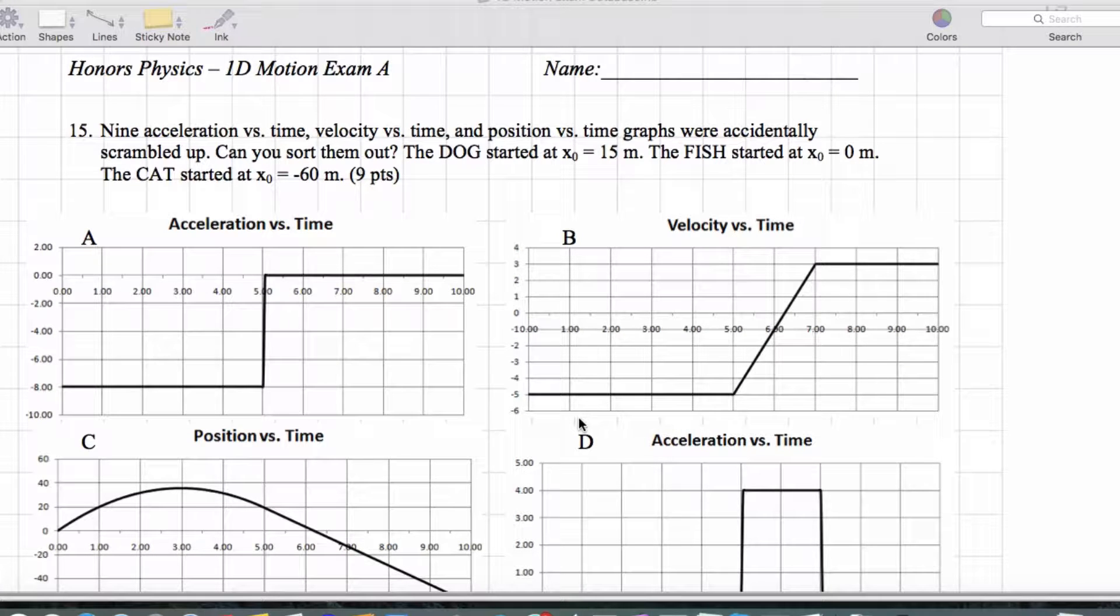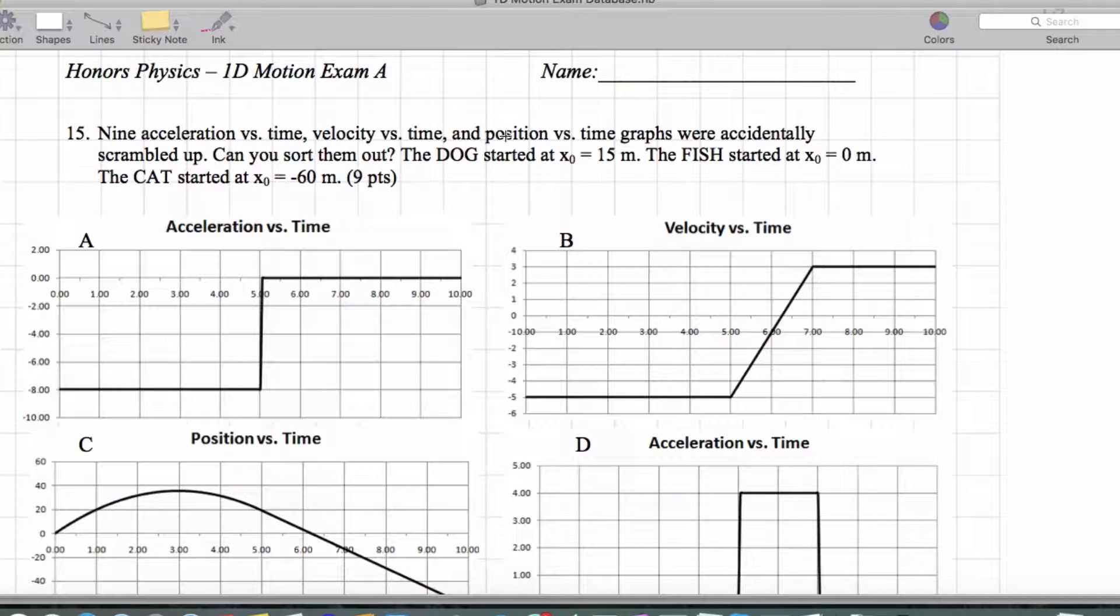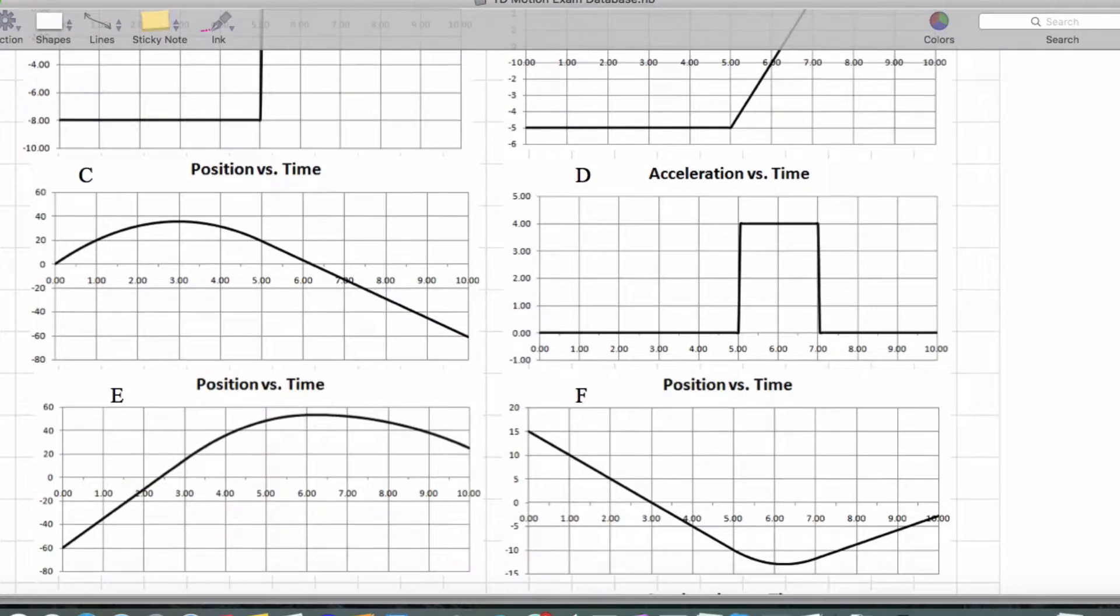Alright, so continuing with this last set of videos, we have three situations: we have a dog, a fish, and a cat. I'm gonna assume the fish is in a river. So we need to look at the position graphs and identify them to start with. The dog starts at 15 meters, so let's find that one.